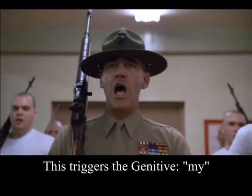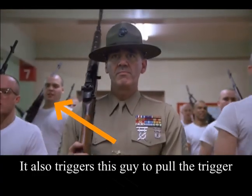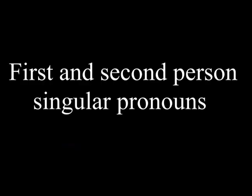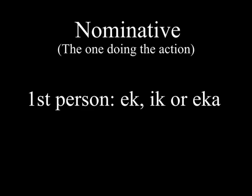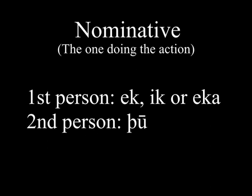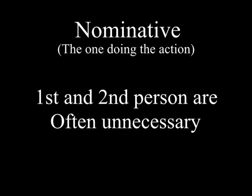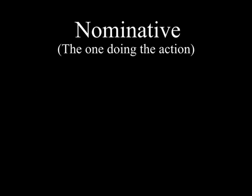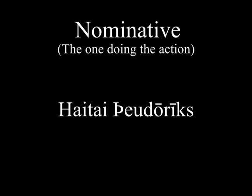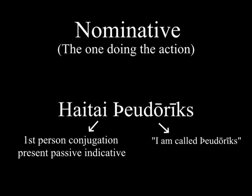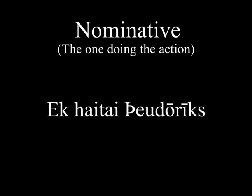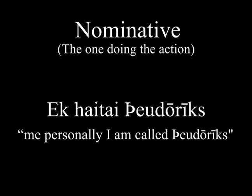Nominative: 'Ek', 'Ek' or 'Eka'. Here you can see the connection to Latin 'ego'. Second person 'Thu'. Nominative personal pronouns are often unnecessary because the subject will be guessed by conjugating the verb. A correct sentence would be 'gaitai theodoriks'. If you say 'ek gaitai theodoriks', you put a self-centered emphasis.